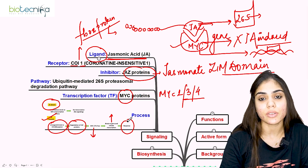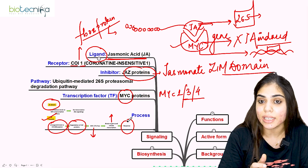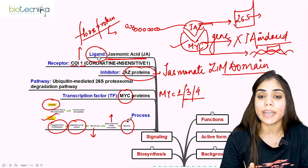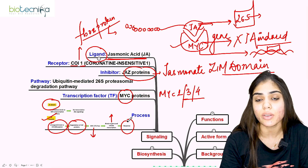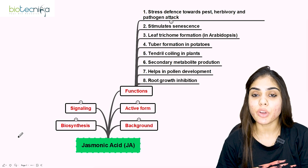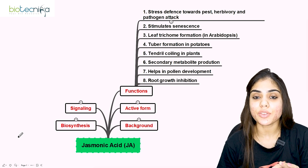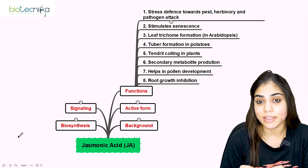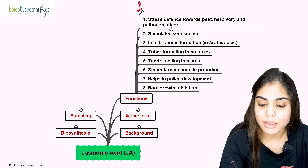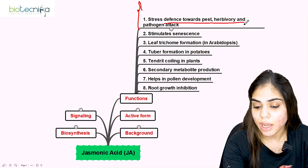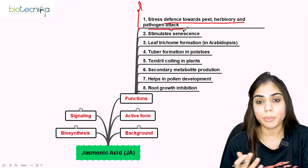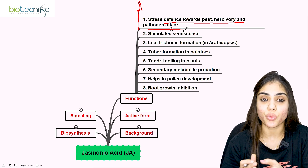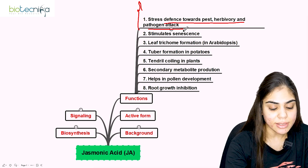The jasmonic acid induced responses represent the functions of this phytohormone. Firstly, when jasmonic acid induced expression occurs via the MYC transcription factor, it causes stress defense against pest, herbivore, and pathogen effects — protecting plants from these attacks. Jasmonic acid also stimulates senescence in plants, meaning it promotes the aging process, stimulating both flower and leaf senescence, with flower senescence being more pronounced.